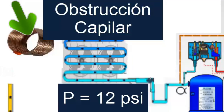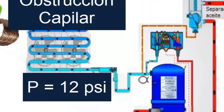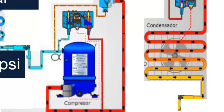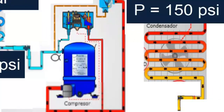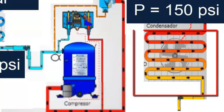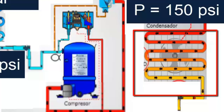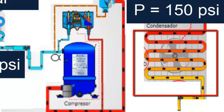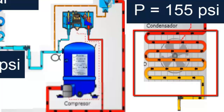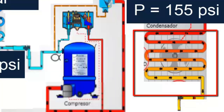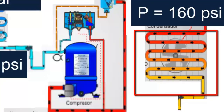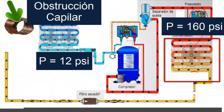However, the compressor continues to suck and continues to discharge into the condenser. The condenser that before had a pressure of 150 psi is beginning to receive refrigerant at high pressure. However, this area is obstructed and the refrigerant begins to concentrate in this part. Therefore, we are going to have an increase in high pressure. The high pressure begins to rise from 150 to 155, and we are going to assume 160 psi. The increase in pressure is because there is a greater amount of refrigerant at this point.